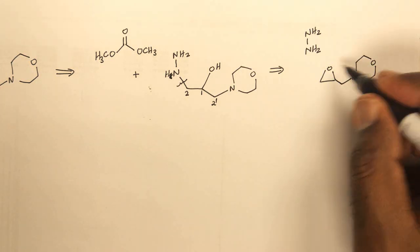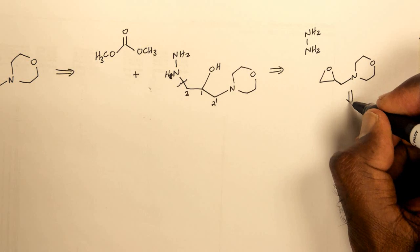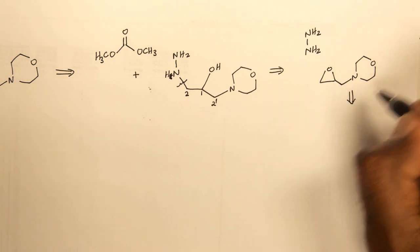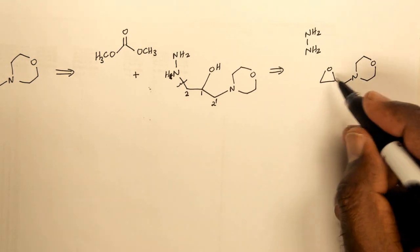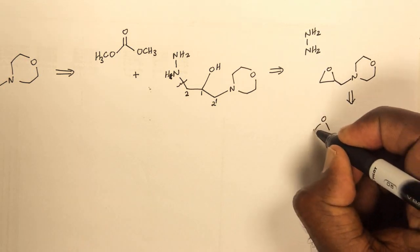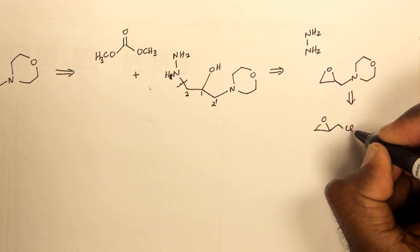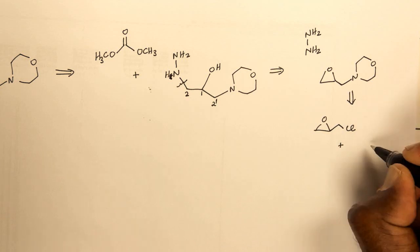If you look at this structure carefully, we've done an example like this: this can be broken down into epichlorohydrin and morpholine.